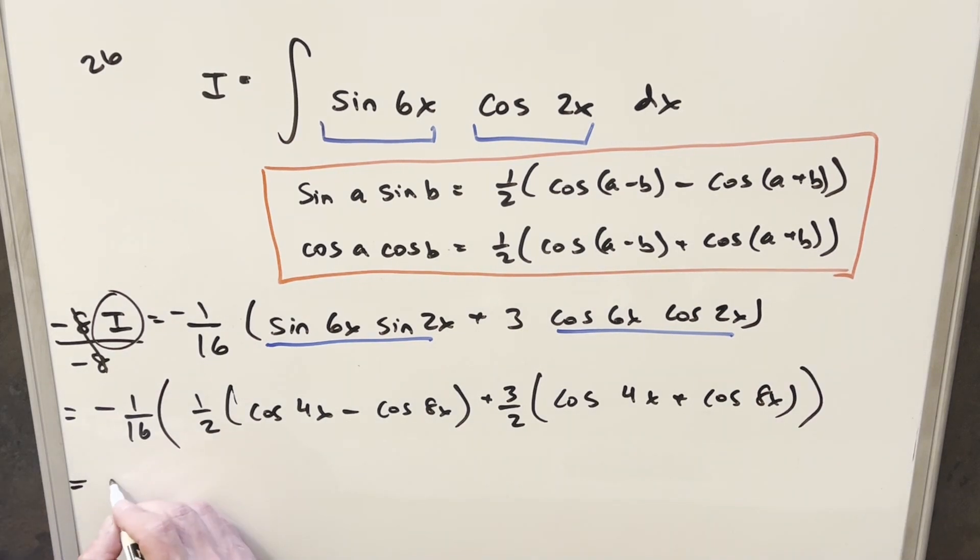Now we distribute in. If we're distributing in the 1 half and the 3 halves in here. First, for cosine 4x, when we put this all together, we're going to have a half cosine 4x plus 3 halves cosine 4x. That's just going to be 2. So this is going to be 2 cosine 4x. And then for cosine 8x, we're going to have 3 halves cosine 8x minus half cosine 8x. That's just going to give me 1 cosine 8x. And just add a plus C, and that's it.